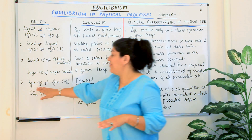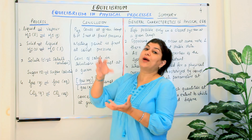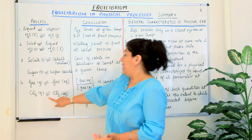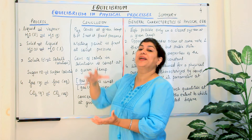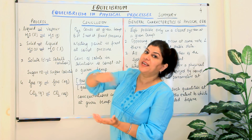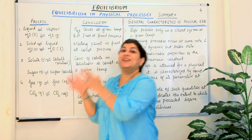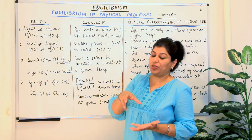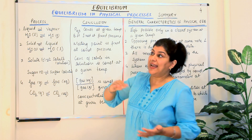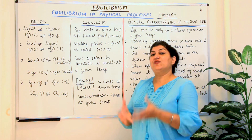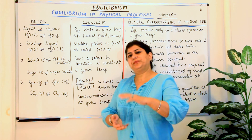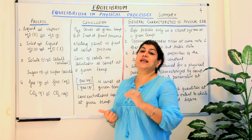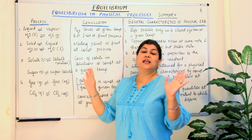It is the same with gases. When you dissolve a gas in a liquid — for example, carbon dioxide in carbonated drinks like soda water — the solubility depends on pressure and temperature. The more you pressurize it, the more the gas dissolves, and at a lower temperature it dissolves even more. If you have a cold drink at a higher temperature, it loses its fizz faster because the solubility of carbon dioxide decreases at higher temperatures.